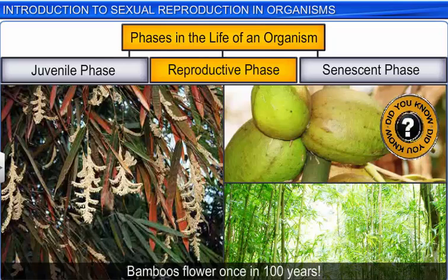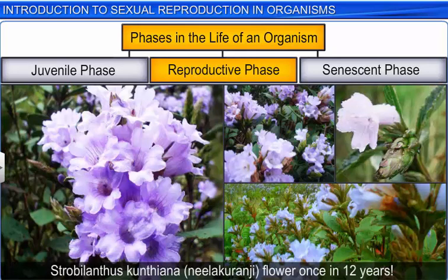Certain plants, such as bamboo, flower only once in a hundred years, produce fruits, and then die. Similarly, Strobilanthus kuntiyana, or neelakurangi, flowers every twelve years.